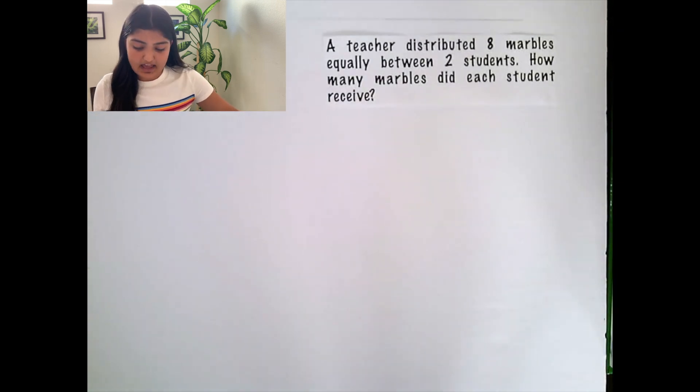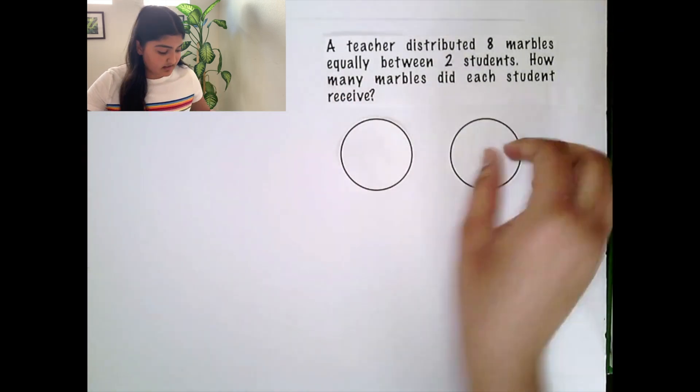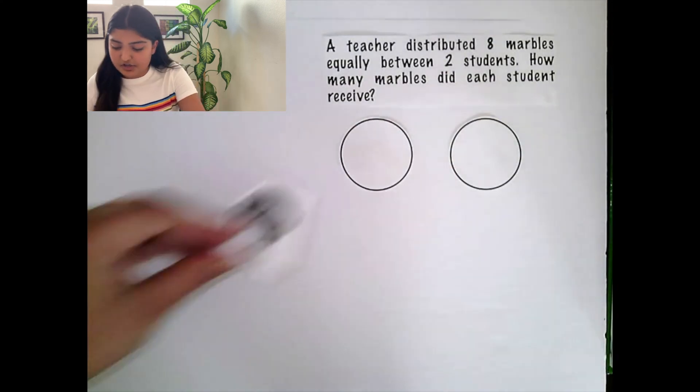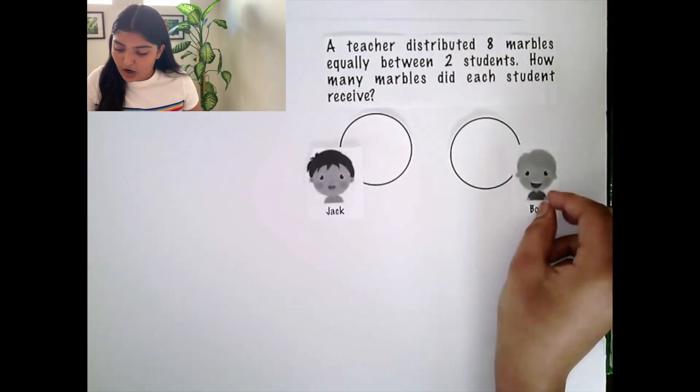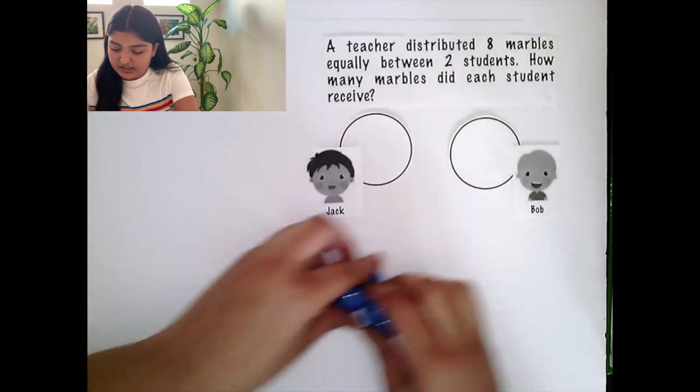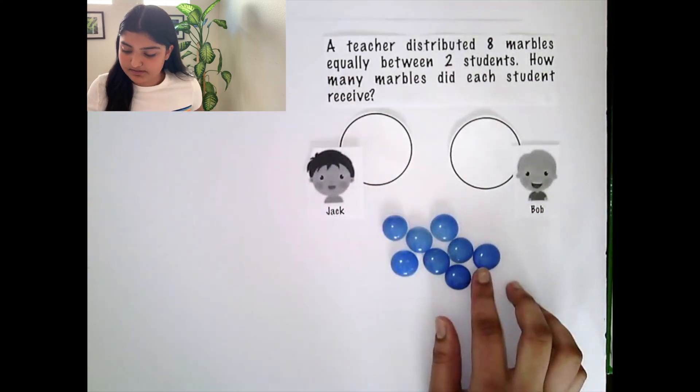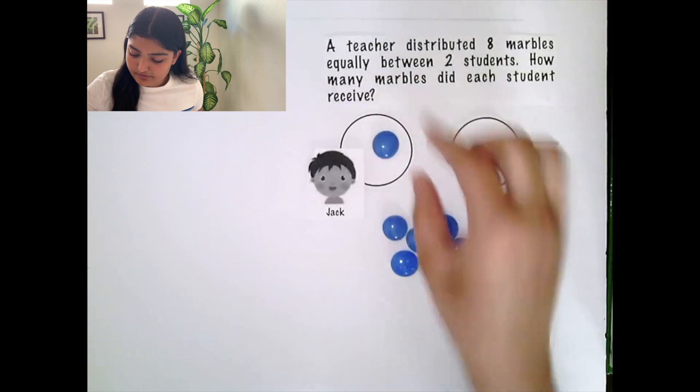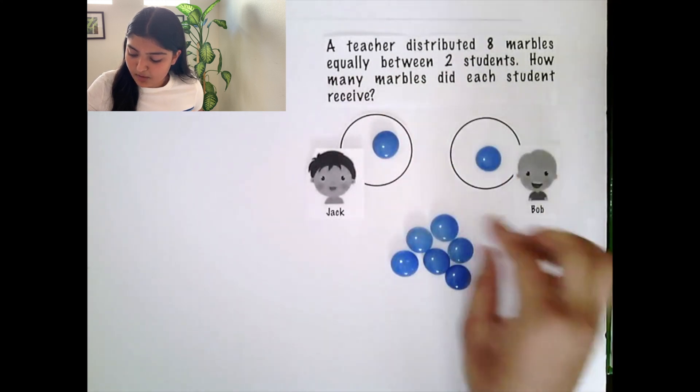So here we have 2 students. Let's name them Jack and Bob. Here a teacher has 8 marbles. So we have 1 marble for Jack, 1 marble for Bob.